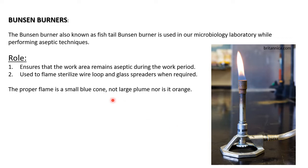The role of the Bunsen burner is to ensure that the work area remains aseptic — meaning no contamination during the work period. It is also used to flame sterilize the wire loop and glass spreaders when required. We flame sterilize glass spreaders when we do spread plate technique, and while doing streaking or inoculation we use the wire loop. These are the techniques — streak plate and spread plate — where we require Bunsen burner for flame sterilization.